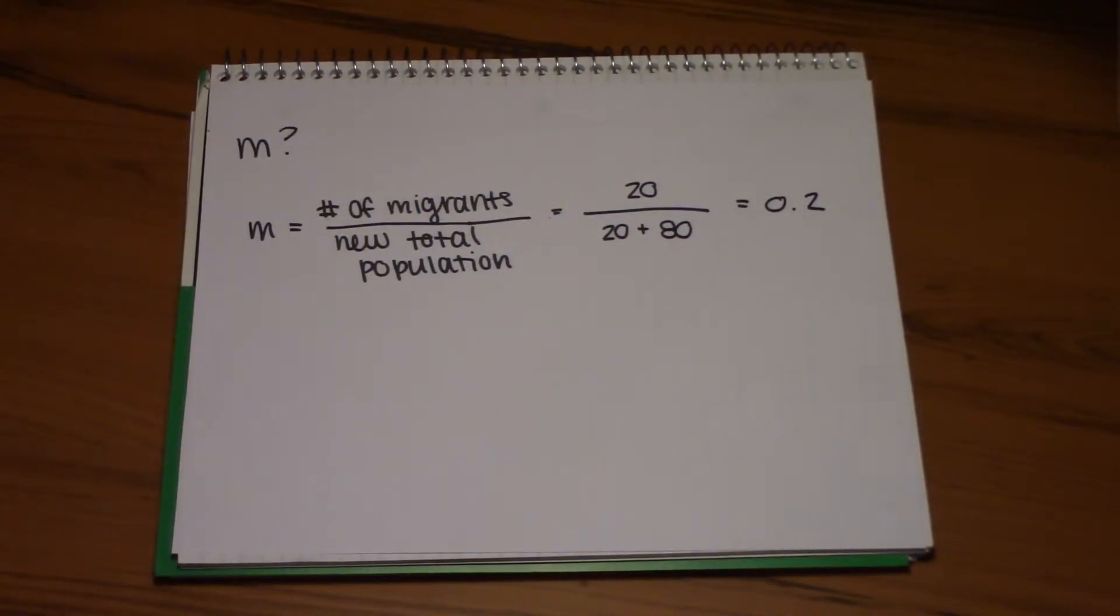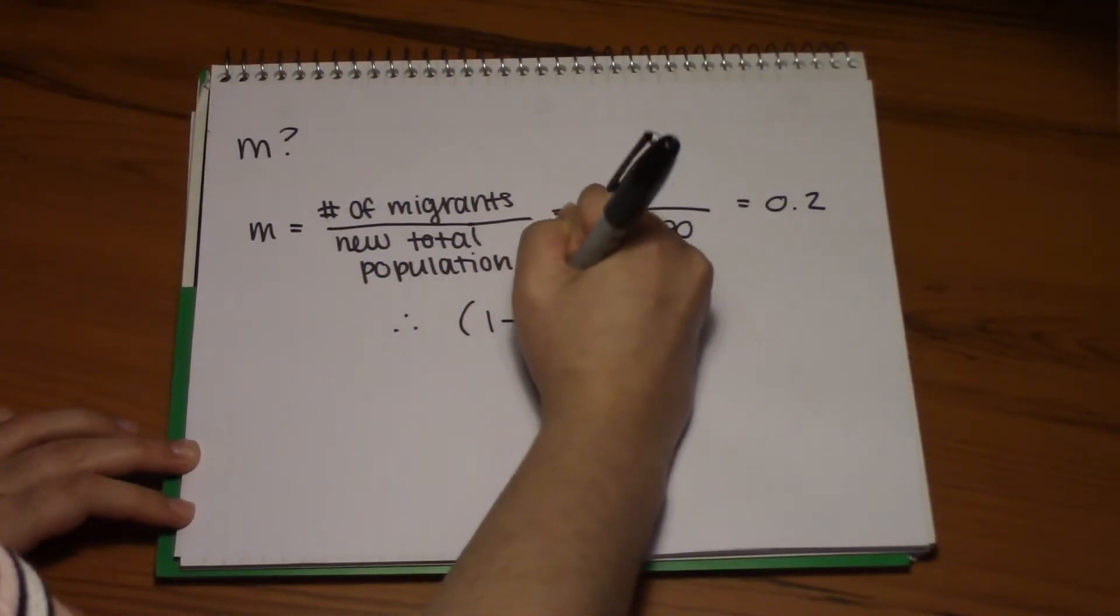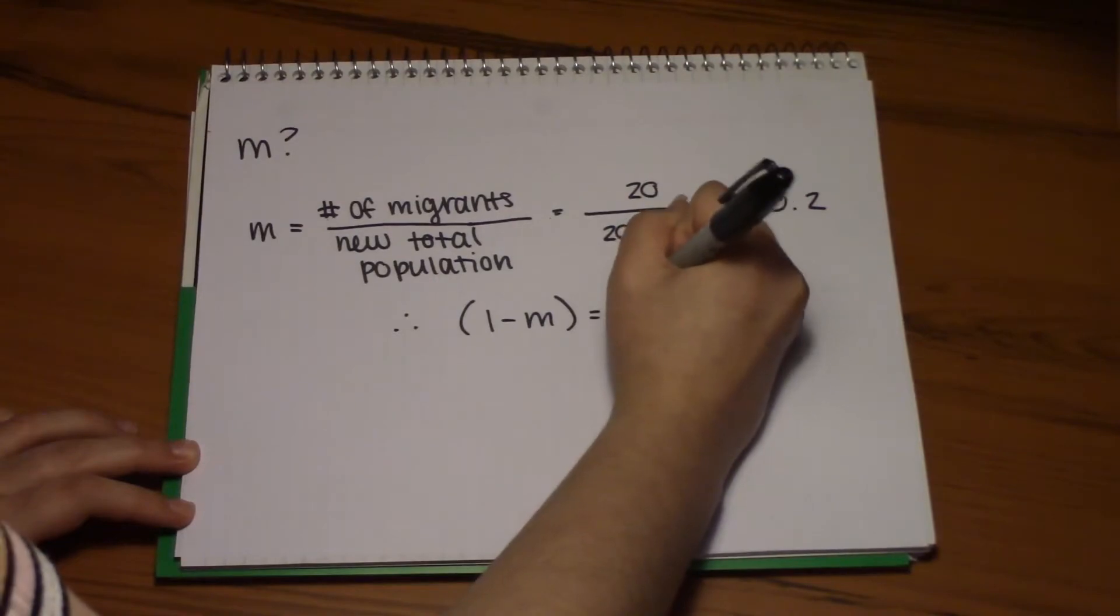Now you'll also notice in the formula, there is a 1 minus m. So if we do all the math, 1 minus m is 0.8.